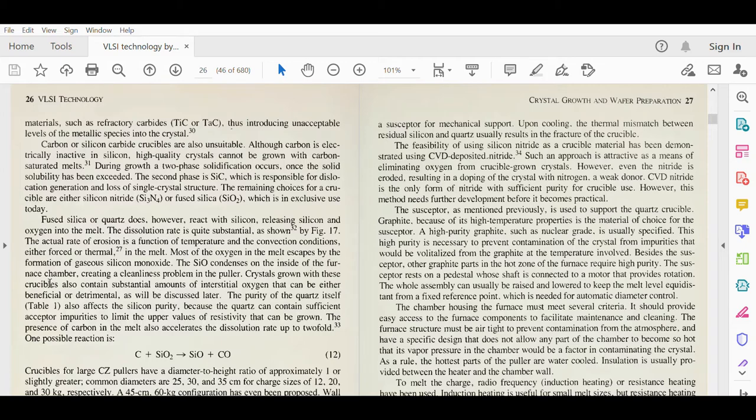Crystals grown with these crucibles also contain substantial amounts of interstitial oxygen that can be either beneficial or detrimental. The purity of the quartz itself affects silicon purity because the quartz can contain sufficient acceptor impurities to limit the upper values of resistivity that can be grown. We discussed table one in the last lecture with examples of how we can increase resistivity by adjusting impurity levels. The resistivity depends on impurity at part per million level.